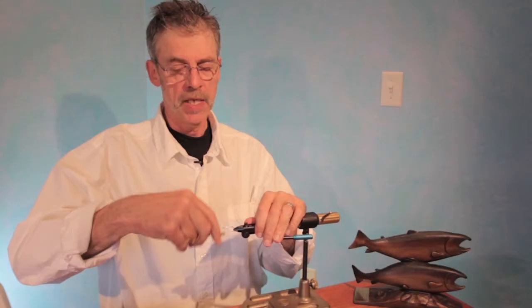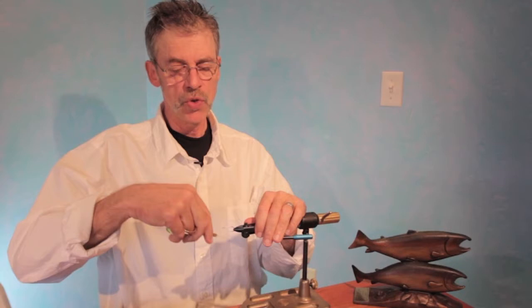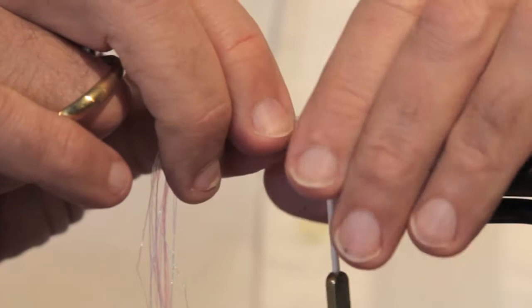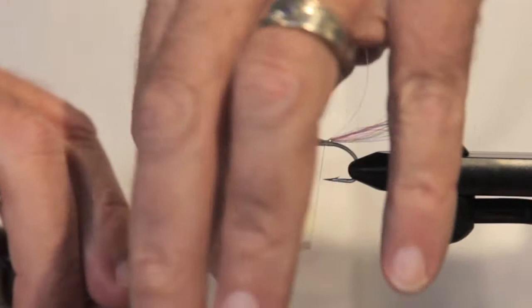It's typically used for silvers in Alaska, but it turns out it's a very good fly for silvers, chinook, and chum salmon. It's really easy to tie.